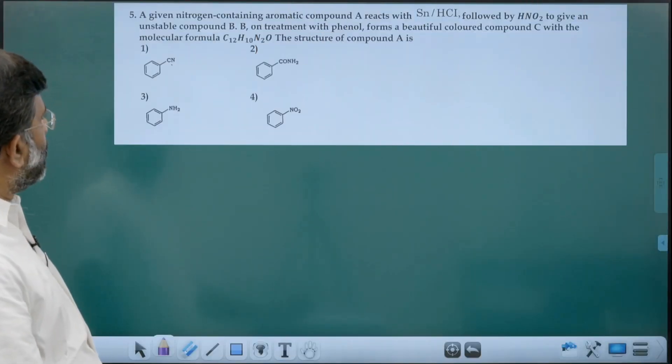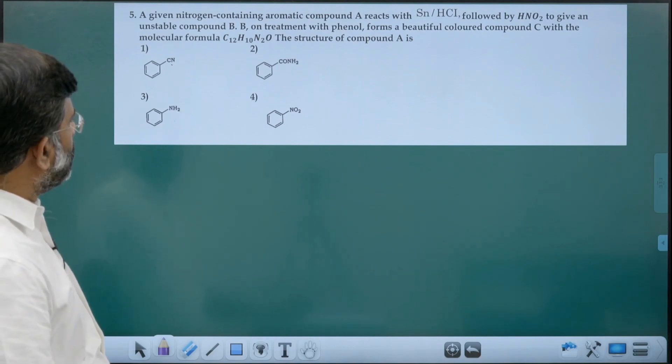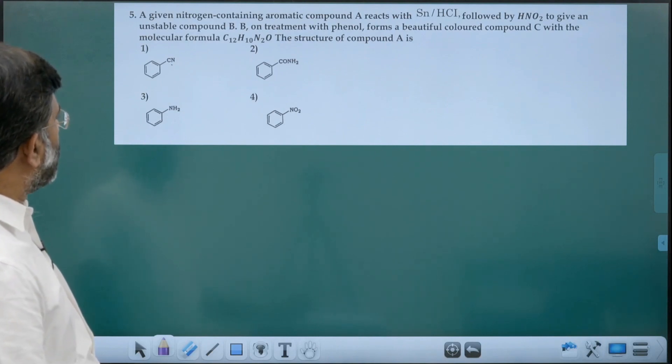A given nitrogen-containing aromatic compound reacts with SnHCl, followed by HNO2 to give unstable compound B. B on treatment with phenol forms a beautiful colored compound C. With the molecular formula given, the structure of compound A is: